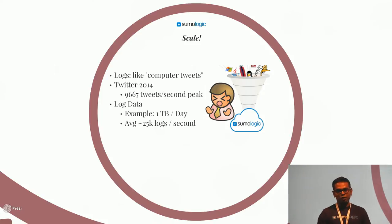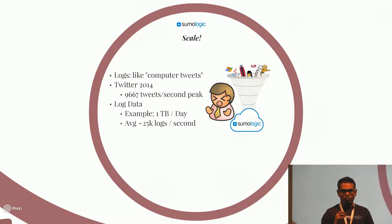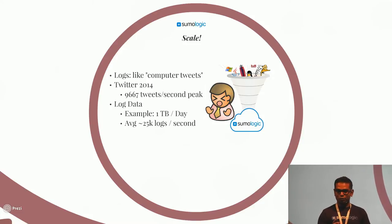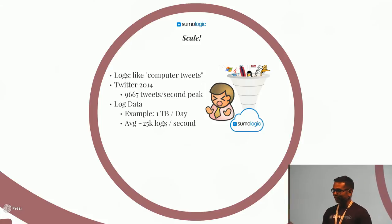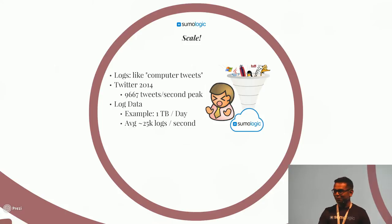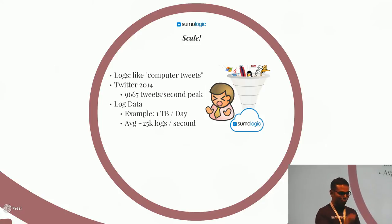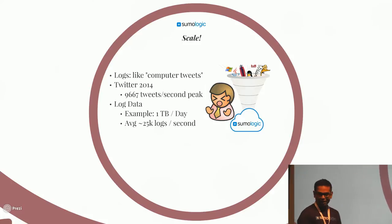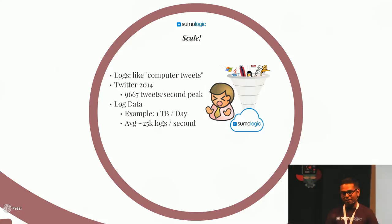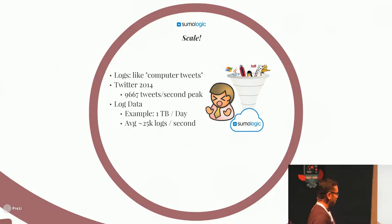The average peak record for the number of tweets per second was sometime during the World Cup — 9,000 tweets per second. Do you know which match that was? Brazil, Germany. Exactly. This is when the fifth goal was scored and they maxed 9,000 tweets a second.